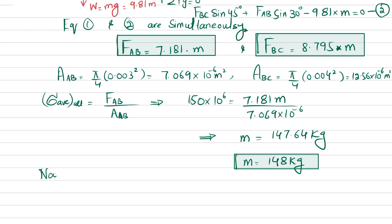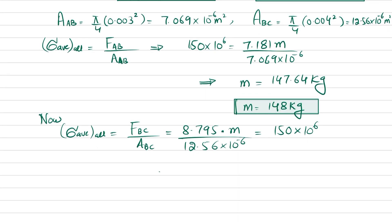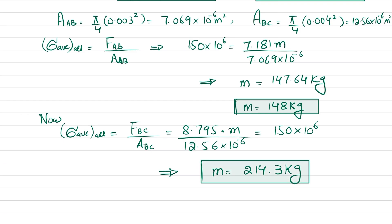For rod BC: average normal stress equals F_BC divided by area of BC, so 150 × 10⁶ = (8.795·m) / (12.56 × 10⁻⁶). Solving gives mass = 214.31 kg.